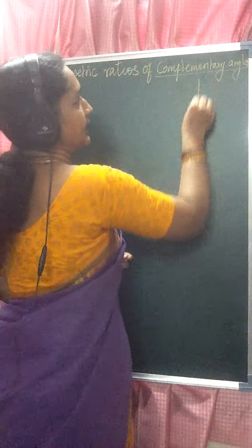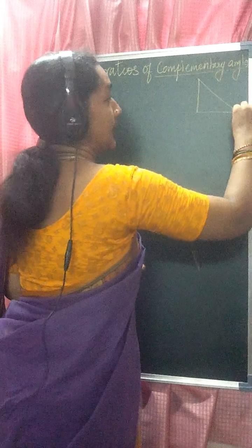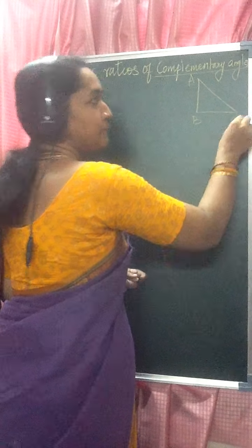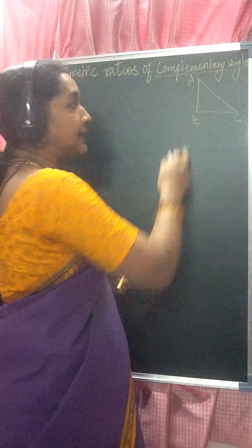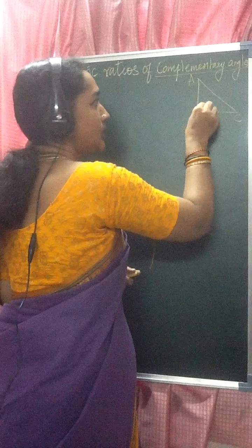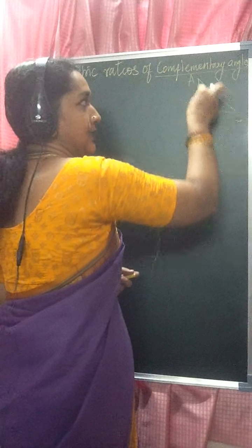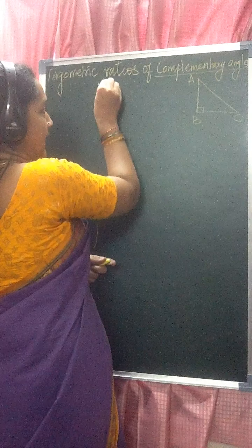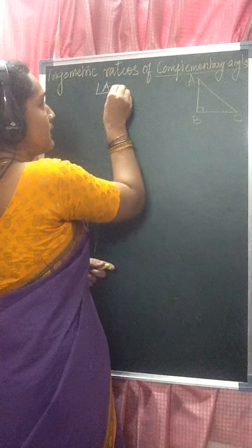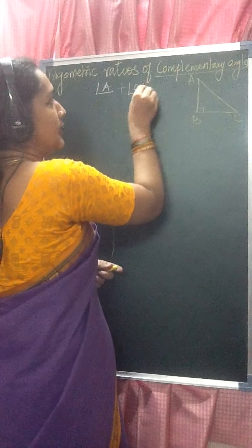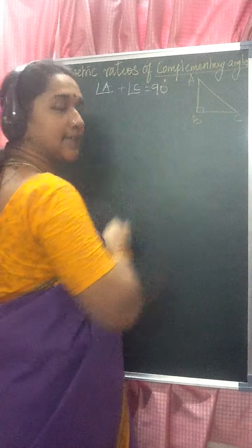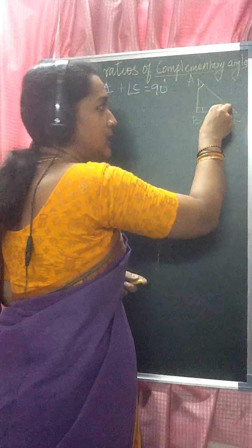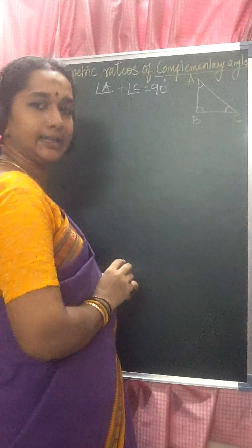When you take a right triangle — right-angled triangle ABC, where it is right-angled at B — the sum of the remaining two angles will be 90 degrees. That is, angle A plus angle C is equal to 90 degrees. When you find the sum of these two angles, it will be 90 degrees.